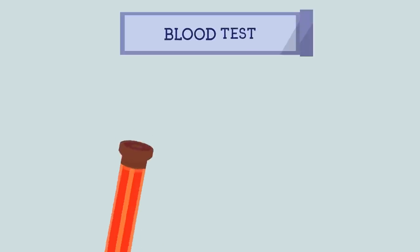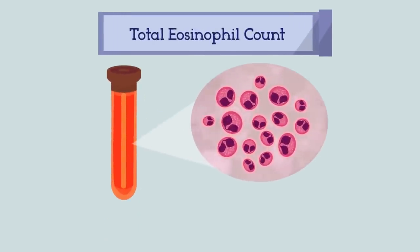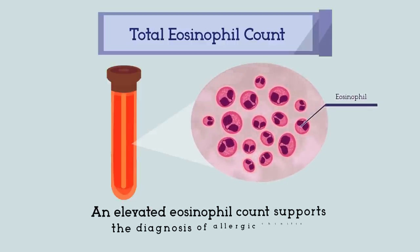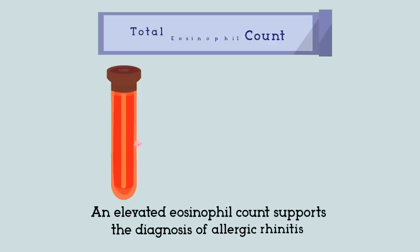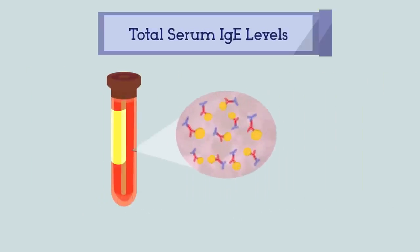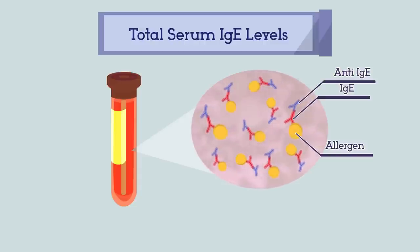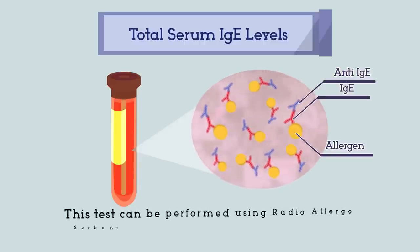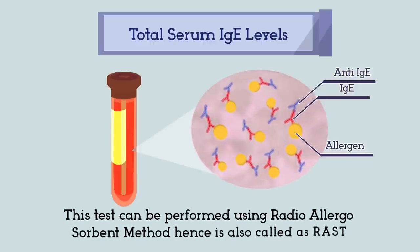3. Blood tests. A. Total blood eosinophil count: an elevated eosinophil count supports the diagnosis of allergic rhinitis. B. Total serum IgE: this is a measurement of the total level of IgE in the blood. An elevated serum IgE level supports the allergic rhinitis diagnosis. This test can be performed using the radioallergosorbent method, hence it is also called the RAST test.